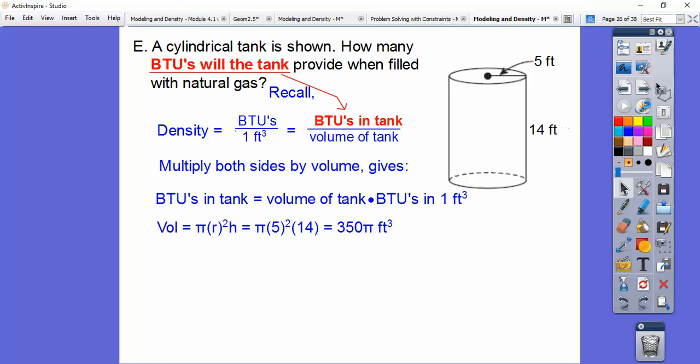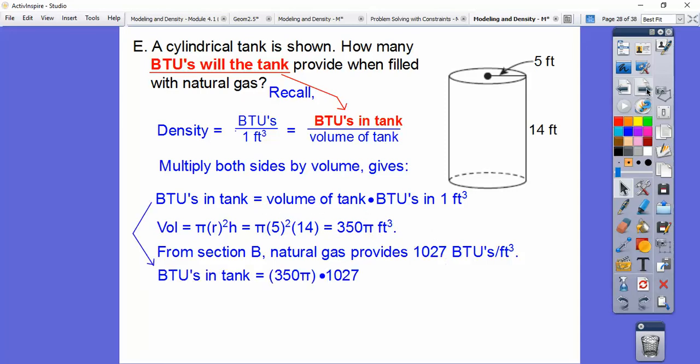The BTUs, and this is going to be of natural gas, we discovered that in section B. So we found from section B that our natural gas provided 1,027 BTUs per cubic foot. So that's what goes in right here. So we're going to put in the 350 right there, and we'll put in the 1,027 right there, and that will tell us how many BTUs of natural gas are in this tank right there.